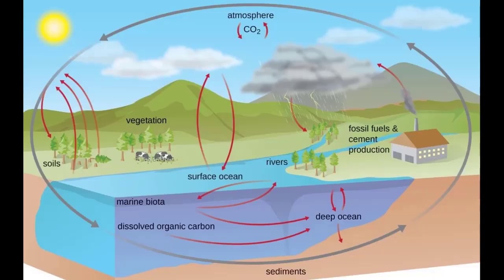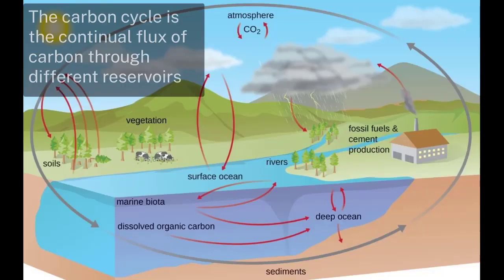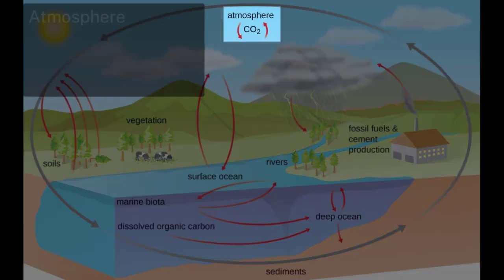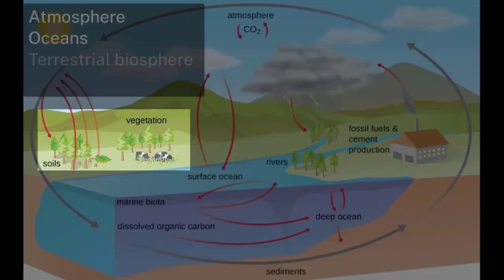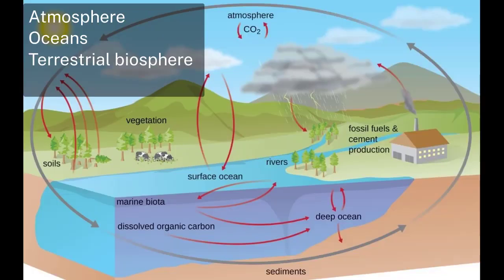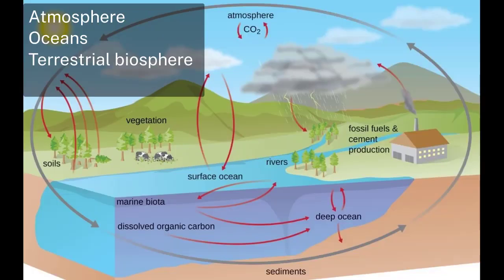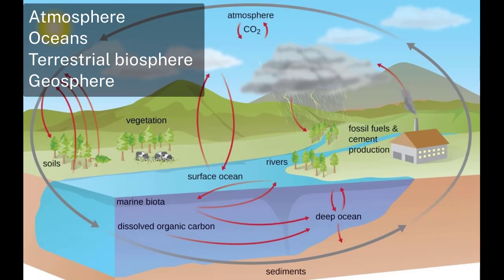The carbon cycle describes the continual movement or flux of carbon through different reservoirs on the Earth. The four major reservoirs are the atmosphere, the oceans, the terrestrial biosphere, which includes plants, animals and soils, and the geosphere, so things like sediments.